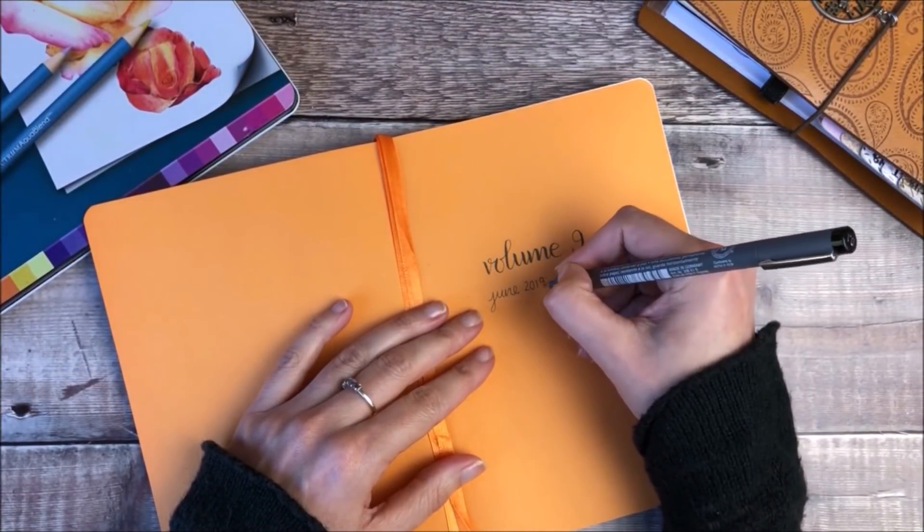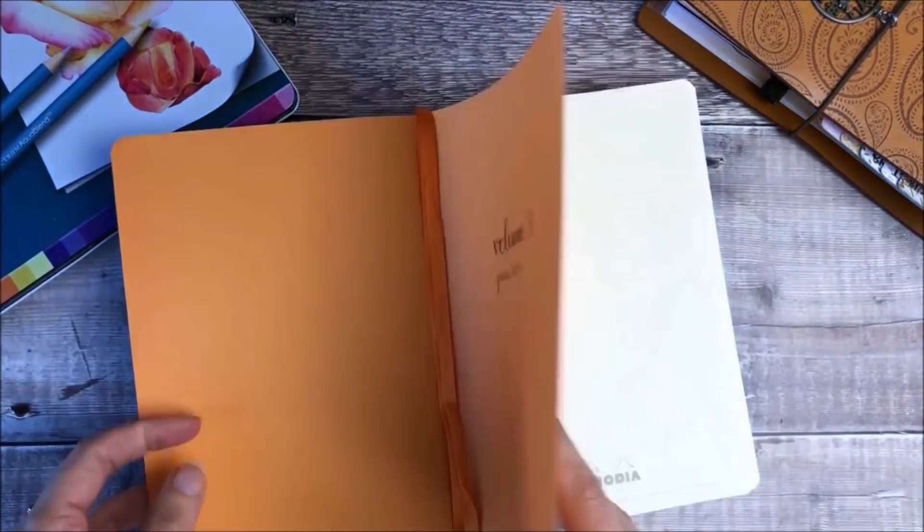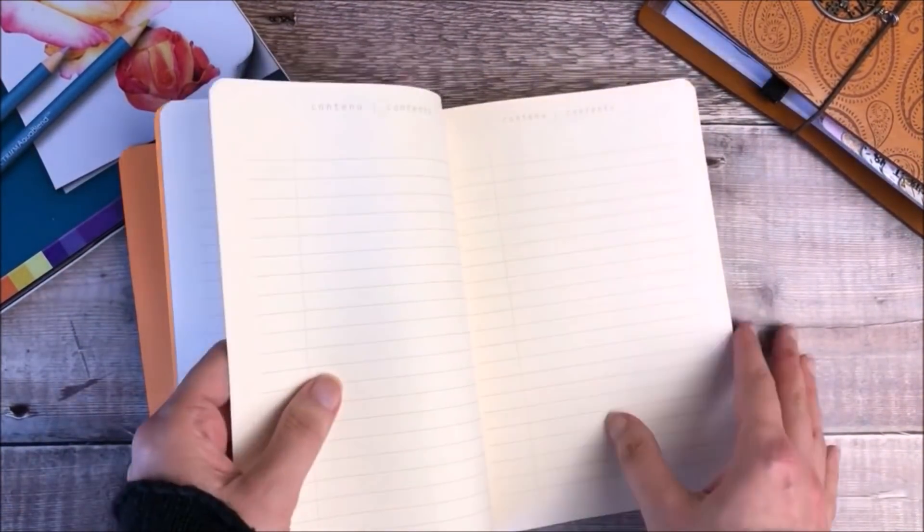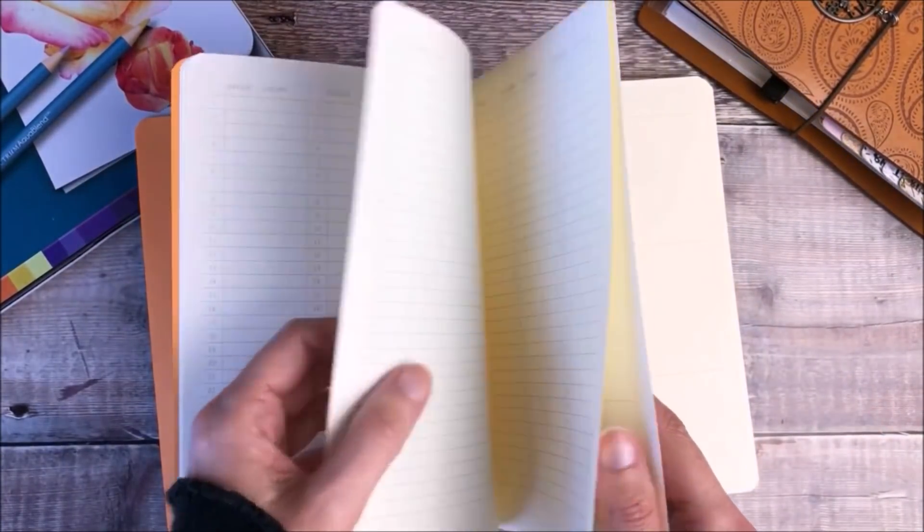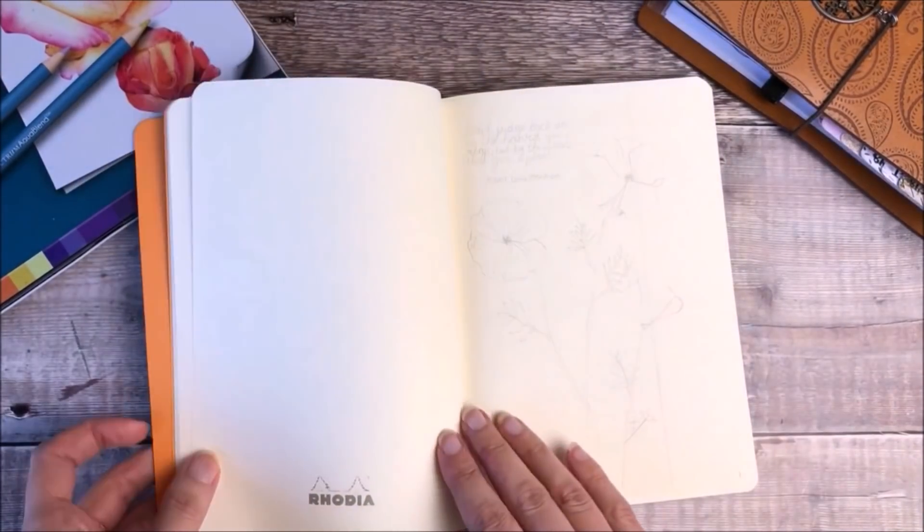I love using the Rhodia goalbook because the paper quality is so lovely. I've got lots of contents pages, a future log already in there, and extra space for calendars if you need it.